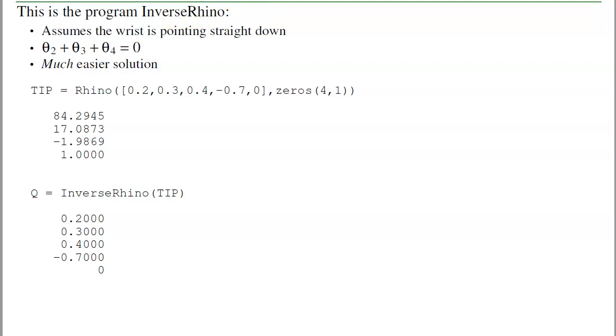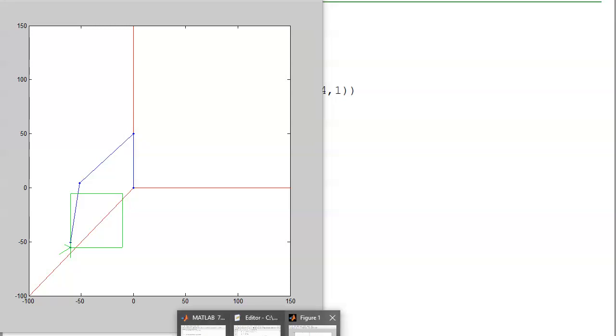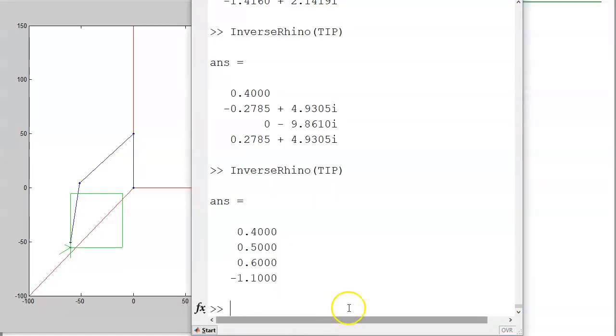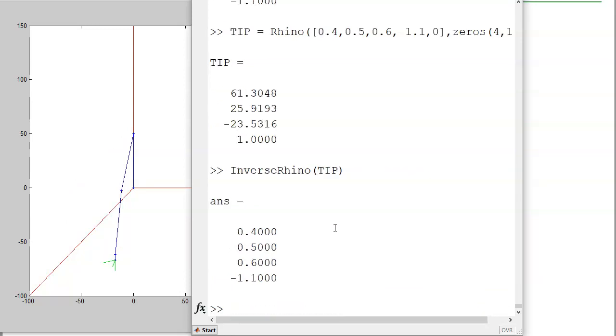The homework for this week is basically to do the same thing. Come up with two different robots. Specify the forward kinematics and the inverse kinematics, and demonstrate it's working. Do something like this. If I specify a point, give it an angle, find the point, give it a point, find the angles. I should wind up back where I started.